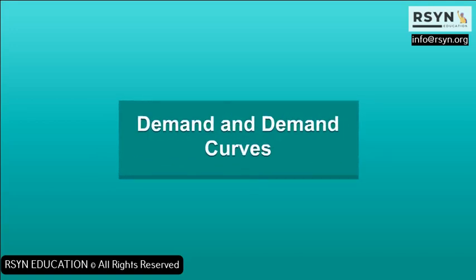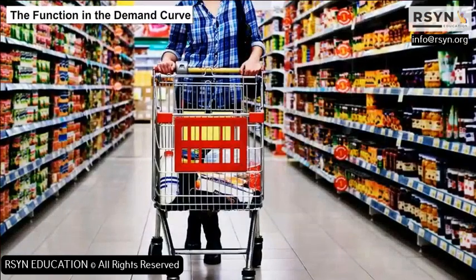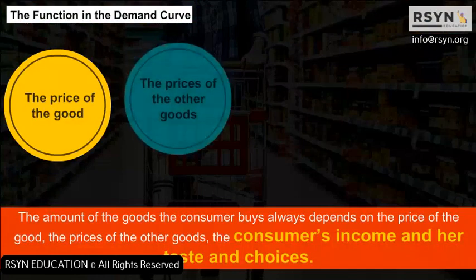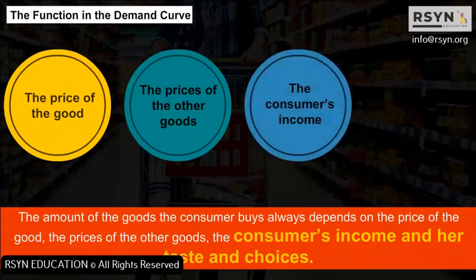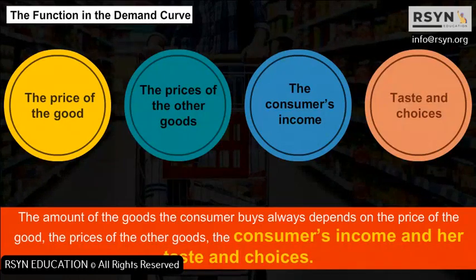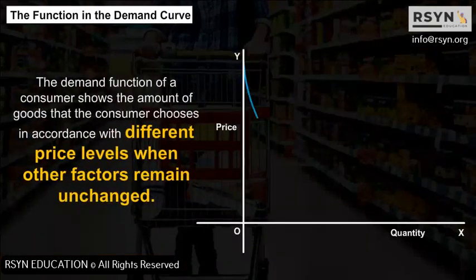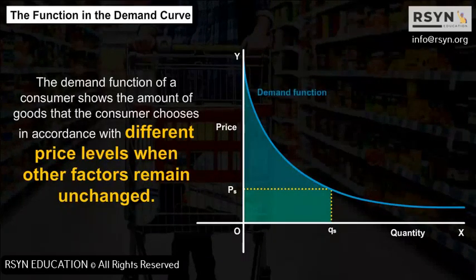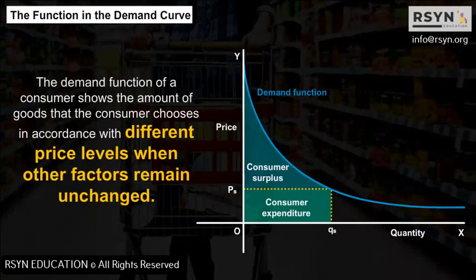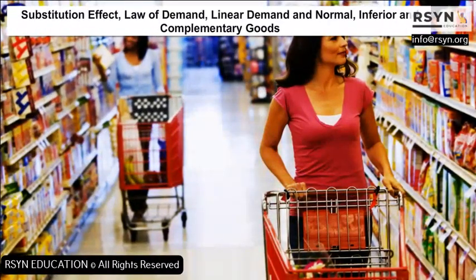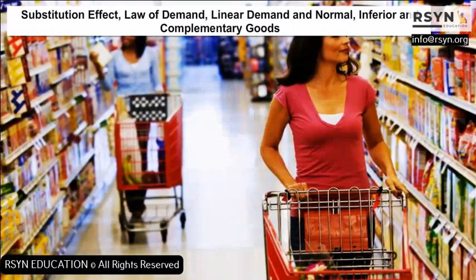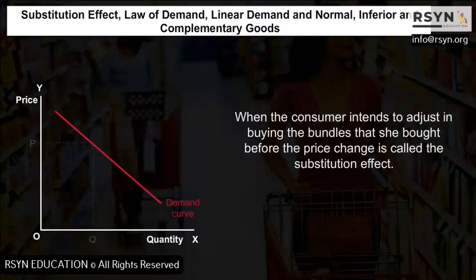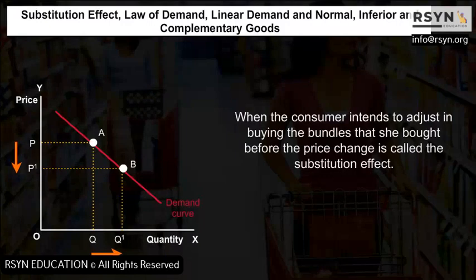Demand and Demand Curves: The amount of goods a consumer buys depends on the price of the good, the prices of other goods, the consumer's income, and her taste and choices. The demand function shows the amount of goods that the consumer chooses at different price levels when other factors remain unchanged. When the consumer adjusts buying bundles due to a price change — with income adjusted accordingly — this is called the substitution effect.